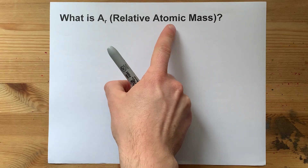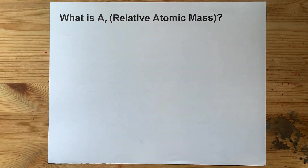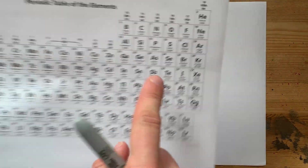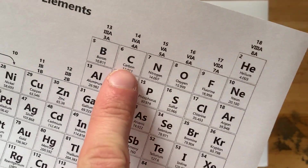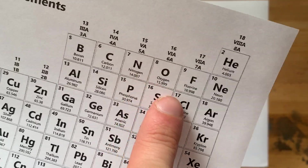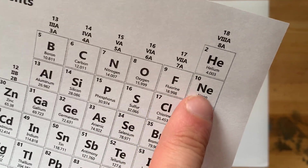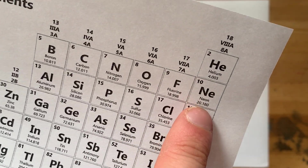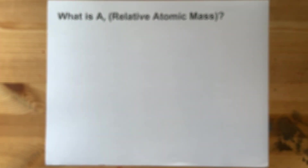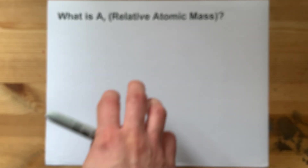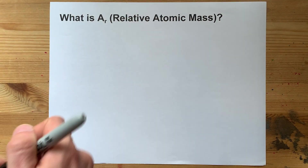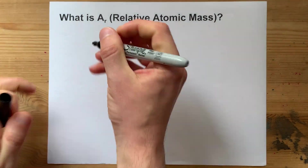You might recognize atomic mass as something you can read directly from the periodic table. For example, neon is 20.180, and that is the case here.